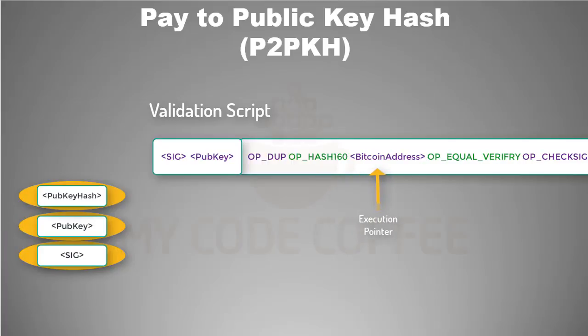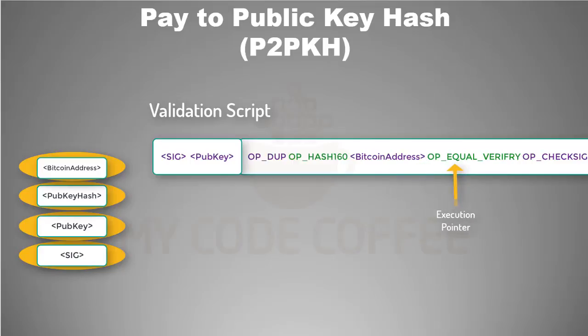We then move the pointer to the next element, which is the Bitcoin address, and push this element to the stack. Then we move the pointer to the next element, which is an operation that checks if the top two elements are equal. If the result is true, this operation will remove those two elements. The topmost element is the Bitcoin address present in the locking script, and the second element is the hash of the public key present in the unlocking script.